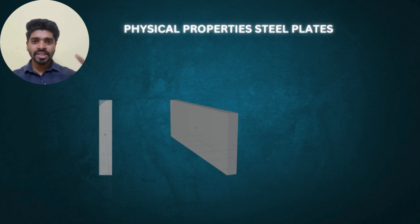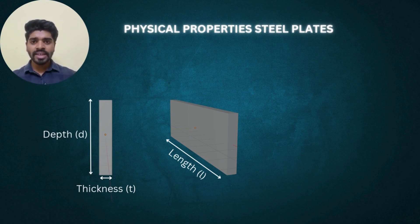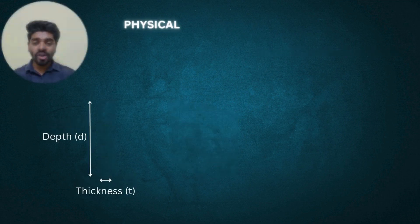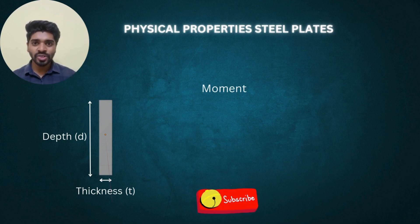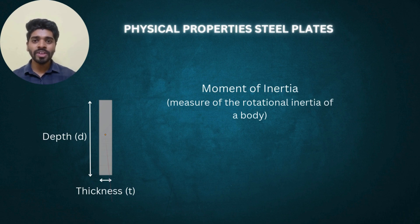For all design purposes you should be aware of the physical properties of this plate. Here you can see one plate — this plate has some depth, some thickness, and some length. Let us consider depth as d, thickness as t, and length as l. With this you can simply find out the area of cross-section of this plate, which is d × t. Now let's calculate the moment of inertia.